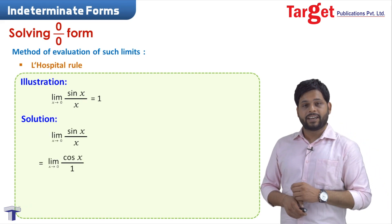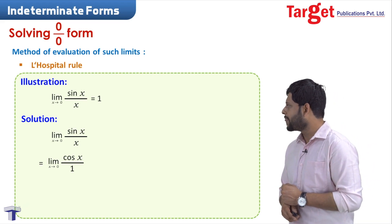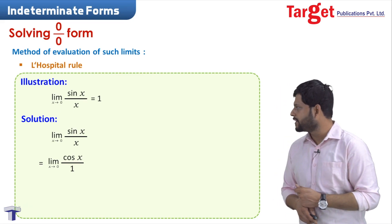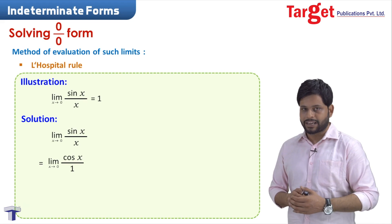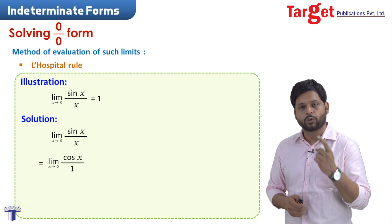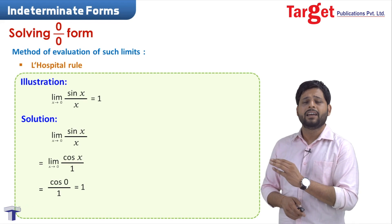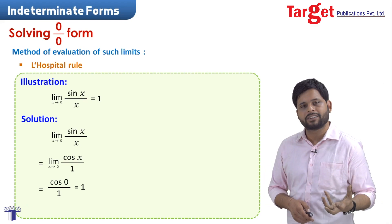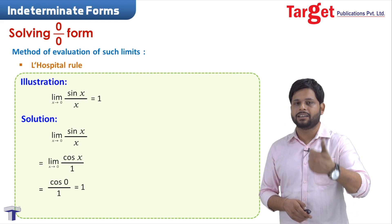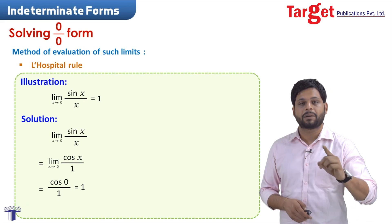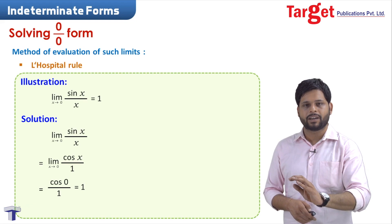I have taken the differentiation of the numerator sin x, giving cos x, and the differentiation of the denominator x, giving 1. So we are left with limit x approaching 0 of cos x upon 1. Substituting x equal to 0 gives cos 0, which is equal to 1. That is the answer. So L'Hôpital's rule is the simplest form we can use whenever we encounter a 0/0 form: differentiate numerator, differentiate denominator separately, and substitute.